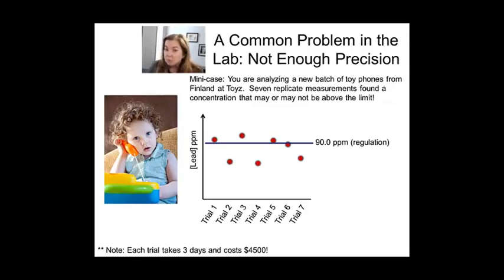So you go and you run the samples, you digest the samples, you run them in flame AES because you have a large lead concentration and that's the instrument of choice. And you get this data set shown here over seven trials. And as you can see, there's a lot of scatter in that data set.